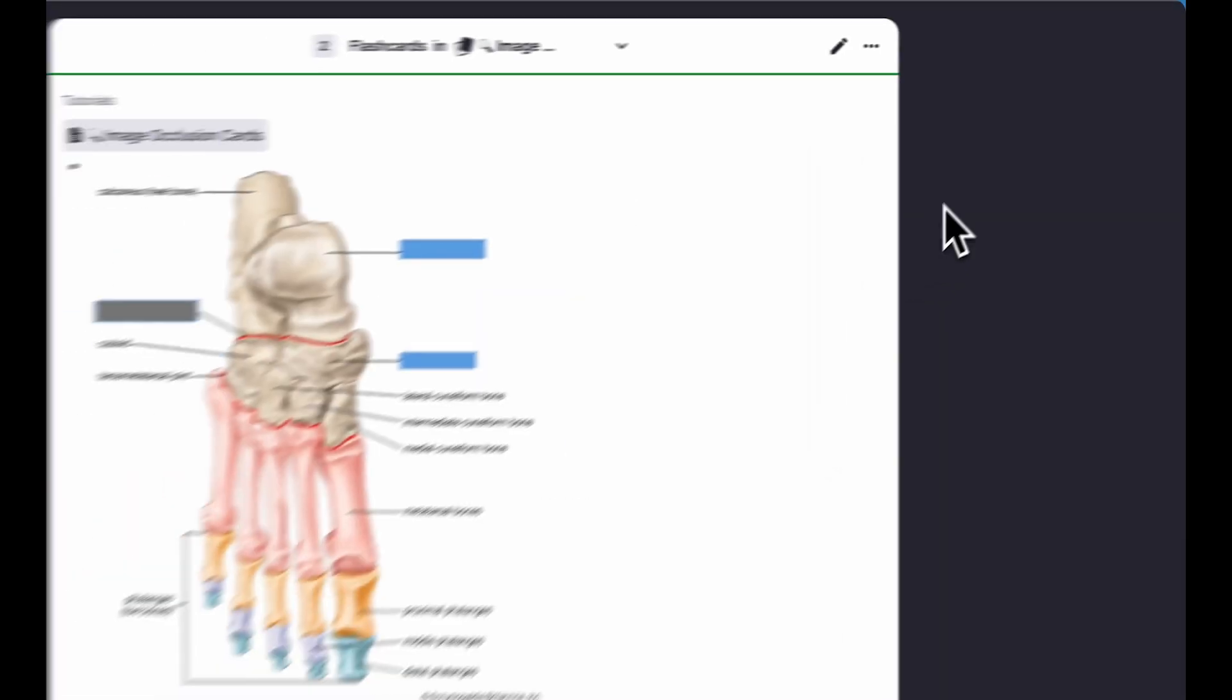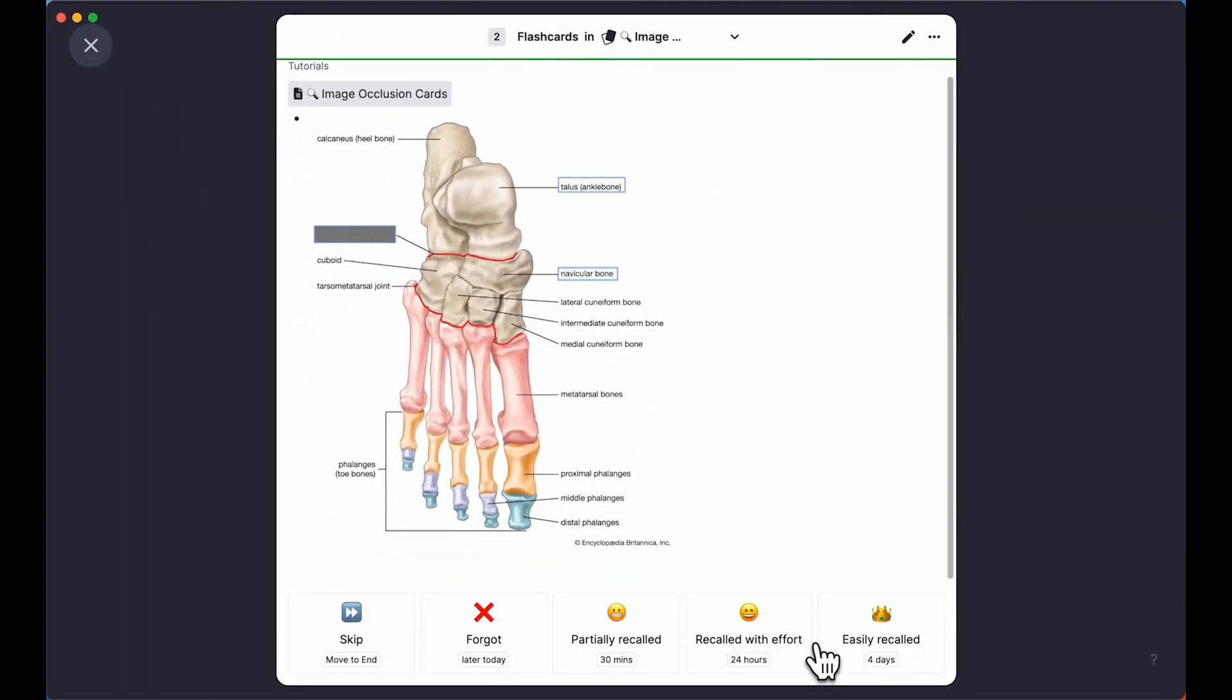Let's now practice our flashcards to see the image occlusion card we made in action. So that's it for the tutorial on image occlusion cards. Give them a try and see how they can help you improve your recall of visual information.